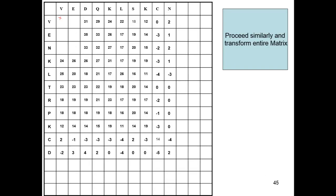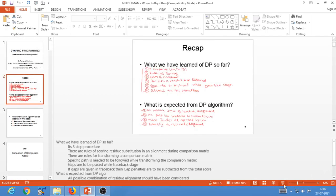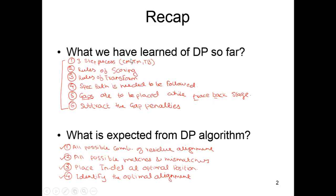Let us revisit what we have set our goals for. We learned that it is a three-step process, of which I have shown you how to create a comparison matrix and how to generate the transformation matrix. You are also now aware that for generating the comparison matrix, some rules are supposed to be followed for scoring. We are going to use the values present in the PAM 250 scoring matrix, and I have also shown you what the rules are for creating your transformation matrix.